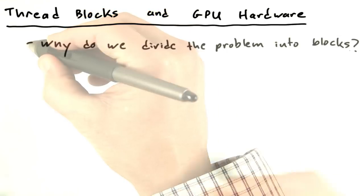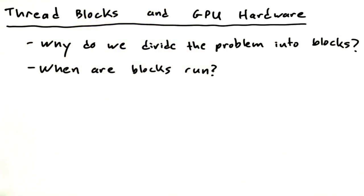So you might be wondering, why do we divide the problem into blocks? When do blocks get run? And if you have a whole bunch of thread blocks, in what order do they run?